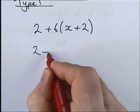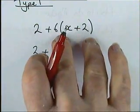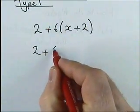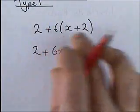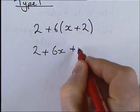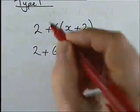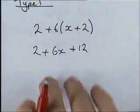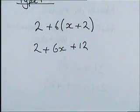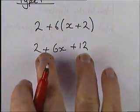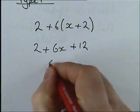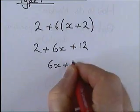What we need to do is expand that bracket separately. We get two plus — now expanding the bracket — six x's are 6x and six twos are twelve. The two stays the same but the bracket expands to give 6x + 12. Now we can simplify: two plus twelve makes fourteen, so the answer is 6x + 14.